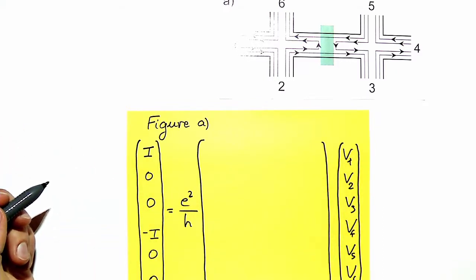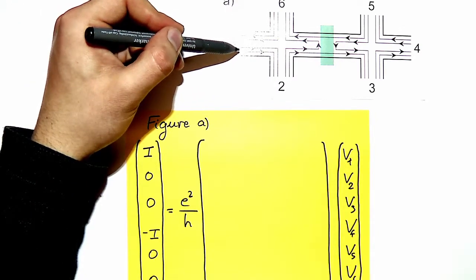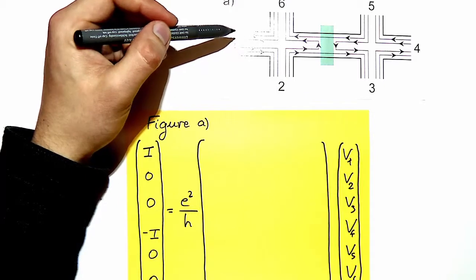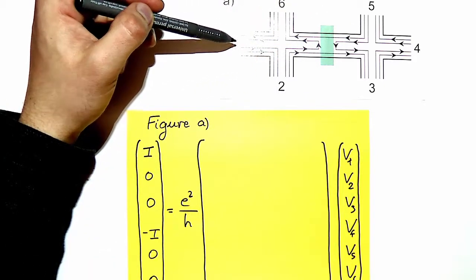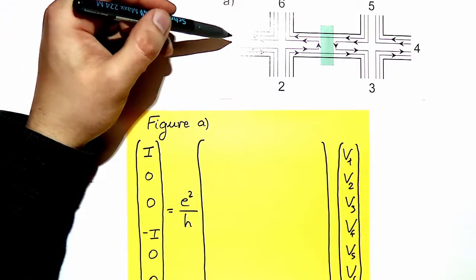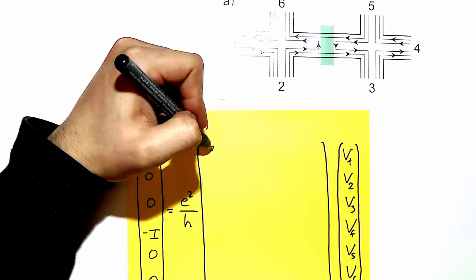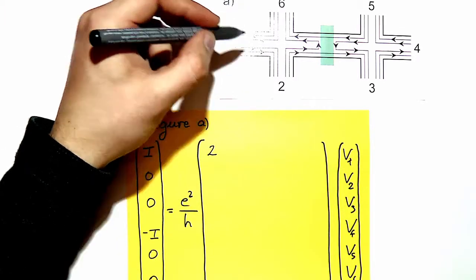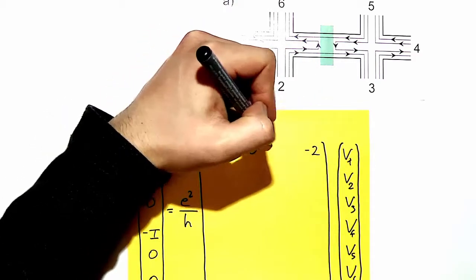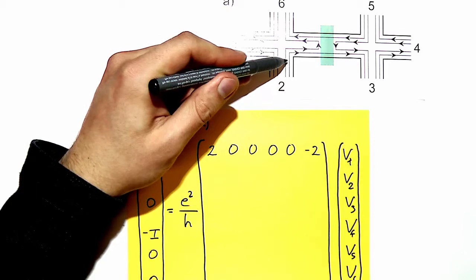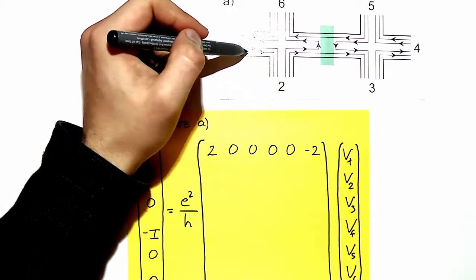To find the elements of the transmission matrix, we count how many modes are transmitted from each contact and how many modes are transmitted from other contacts into the contact we are considering. At contact 1 we have two modes leaving, and two are transmitted from contact 6. Contact 2 supports two modes, and two are incoming from contact 1.